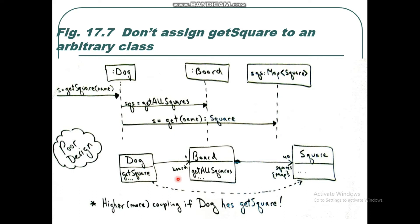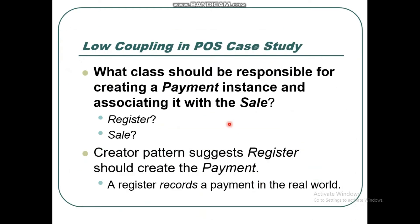In the class diagram, we can see there is a dependency here, and also a dependency here. That is fine. But for the Dice class or Square class, there should not be a dependency in the Dice class — however, here you can see it is poor design. More coupling results if Dice has getSquare, meaning you have incorrectly assigned getSquare to the Dice class. Let's look at the next example.